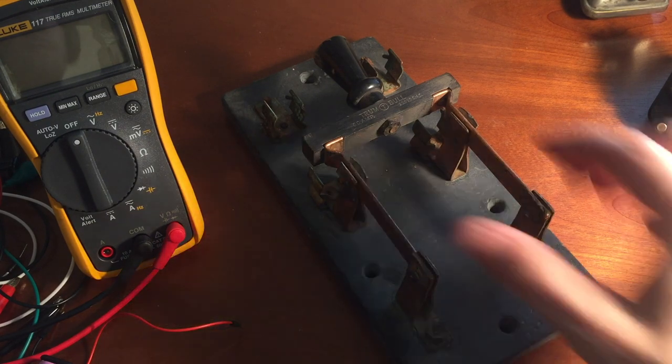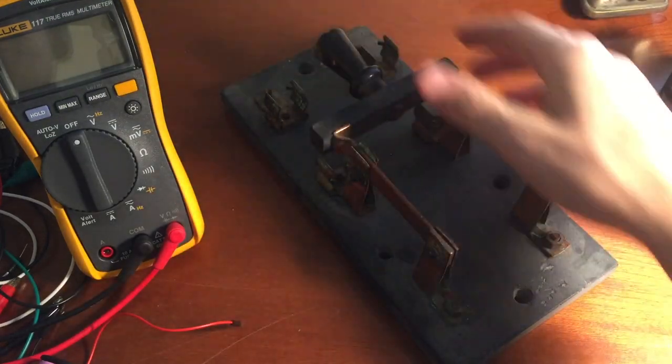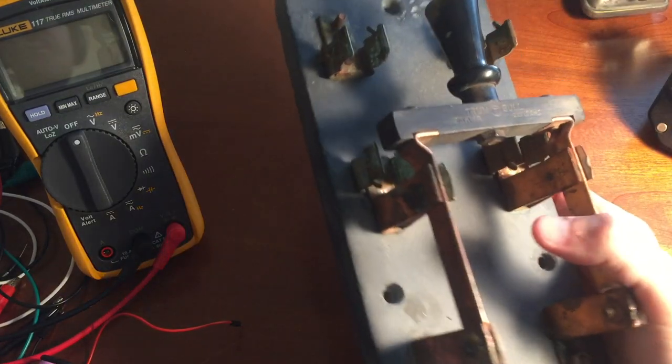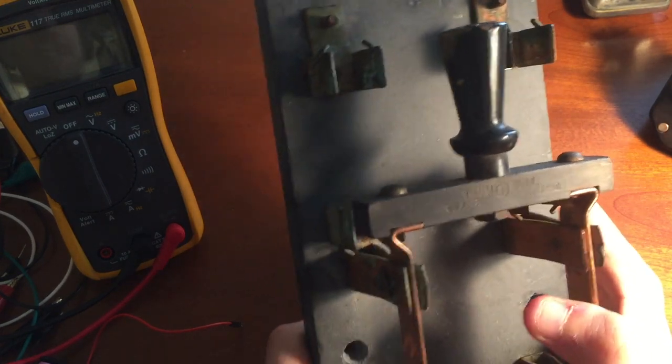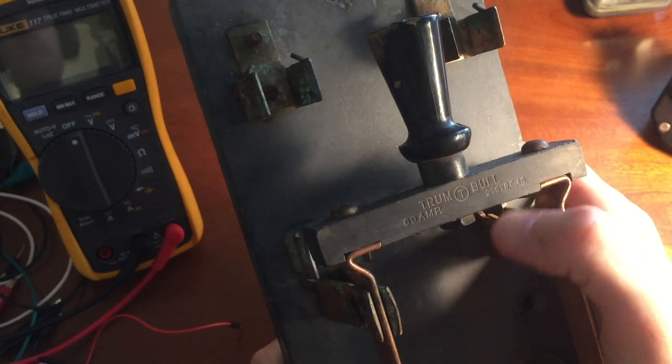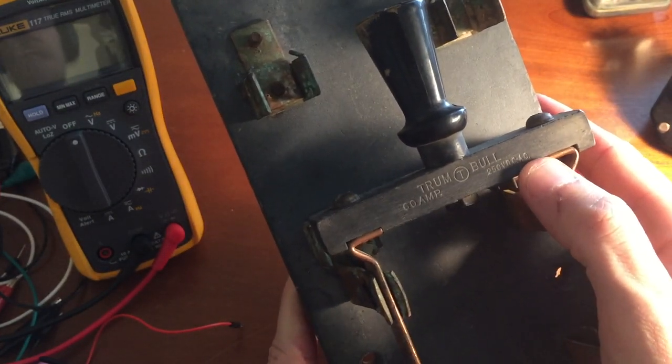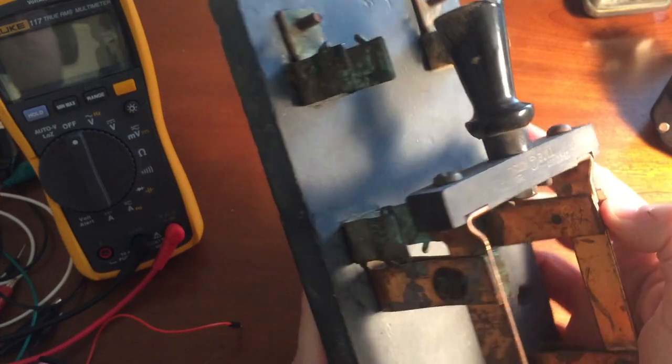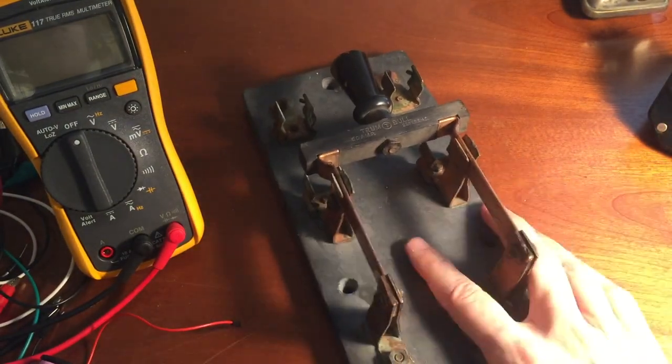This is a knife switch, your standard switch. I got it off a guy off Craigslist who used it to make an executioner's chair for Halloween. This is a Trumbull knife switch rated for 60 amps 250 volts. I think this is DC and AC.